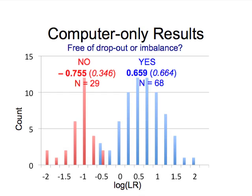We also looked at computer-only results. On the right, these are results the computer called that a person didn't, and these were free of dropout or severe peak imbalance — pretty much the same distribution as before. When there is severe dropout or peak imbalance, shown in red, we see a distribution shifted to the left, with numbers typically between negative two and zero. This shows the computer saying there's not much support in the data here, going the other way on that particular locus after evaluating all the data.